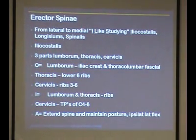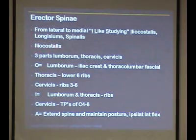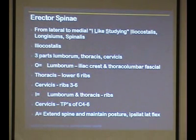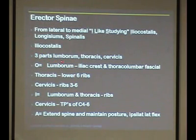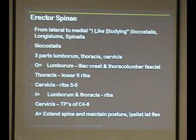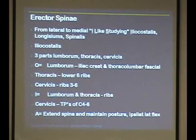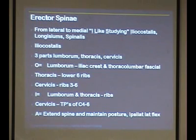Moving to the erector spinae itself — three muscles: iliocostalis, longissimus, and spinalis. Breaking down the word 'iliocostalis': in a muscle name, the origin usually comes first. 'Ilio' refers to the ilium and iliac crest, and 'costalis' means ribs. So it goes from the iliac crest to the ribs, originating also from the thoracolumbar fascia — a sheet of fascia in the thoracic and lumbar spine.